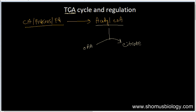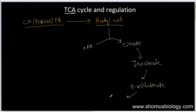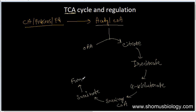This is known as the TCA cycle, also known as the Krebs cycle — TCA stands for tricarboxylic acid cycle. Citrate is the first intermediate produced. From citrate it produces isocitrate; from isocitrate it produces alpha-ketoglutarate; from alpha-ketoglutarate it produces succinyl CoA; from succinyl CoA it produces succinate.